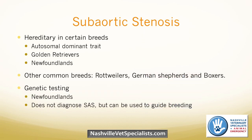Subaortic stenosis is hereditary in certain breeds — inherited as an autosomal dominant trait in golden retrievers and Newfoundlands. This is very important for breeding: affected animals should definitely not breed, as they will pass it on. If a golden retriever or Newfoundland has SAS, it likely got it from one of its parents. Mildly affected animals may go undiagnosed, breed, and produce offspring with more severe cases. Other breeds where it's seen but heredity hasn't been proven include Rottweilers, German Shepherd Dogs, and boxers. Generally, subaortic stenosis tends to be seen in larger dogs. Genetic testing is available for Newfoundlands through NC State University.